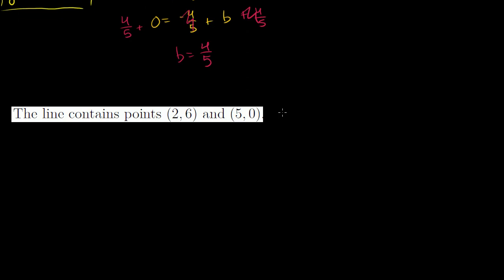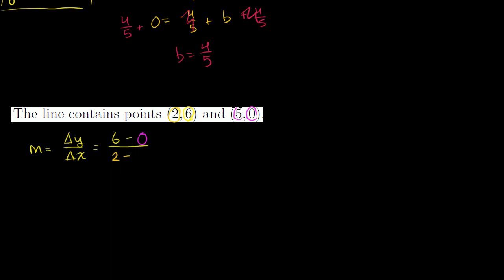The line contains the points (2, 6) and (5, 0). They haven't given us the slope or y-intercept explicitly, but we can figure out both from these coordinates. The slope m = change in y over change in x. Using these points: (6 - 0) over (2 - 5).